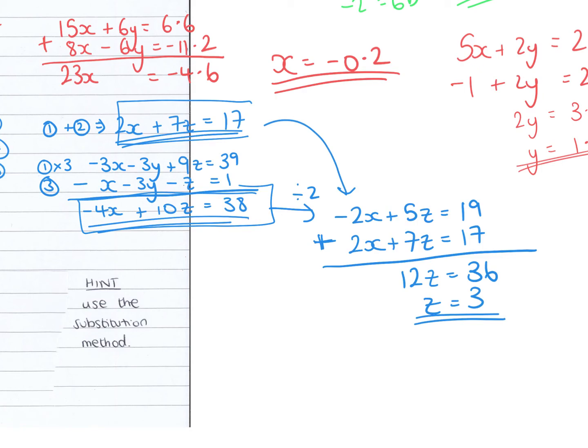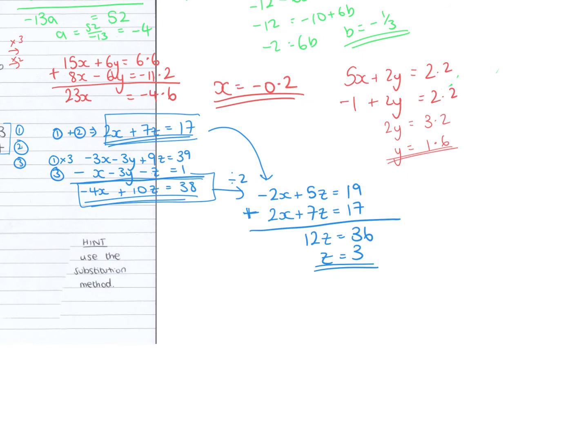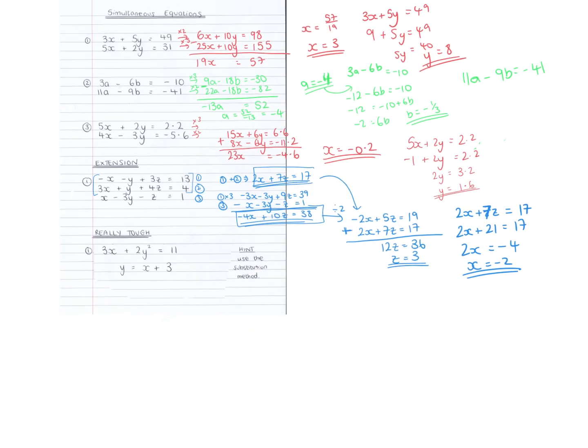And once I know what z is, I can go back up and sub that into one of the other equations. So if I choose 2x plus 7z equals 17, if z is 3, I've got 2x plus 21 equals 17. So 17 minus 21 is minus 4. So x is minus 2. So I've got z and x.